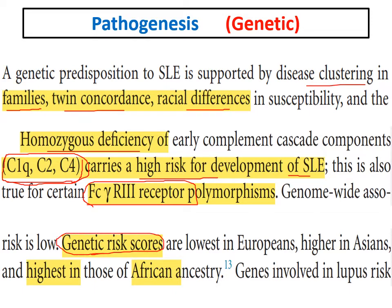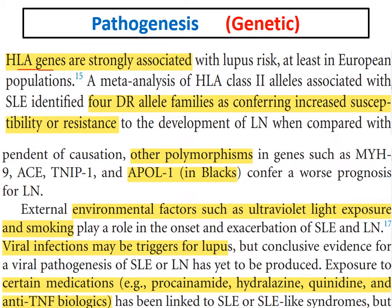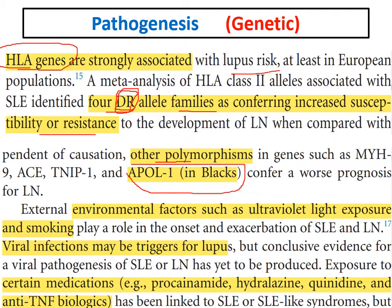Patients with African ancestry will develop lupus nephritis earlier, more severely, and have more genetic predisposition. HLA genes are strongly associated with lupus risk, especially the HLA-DR family — four DR allele families increase susceptibility or resistance to lupus nephritis. Specific to Black populations, the APOL1 polymorphism confers a worse prognosis for lupus nephritis.